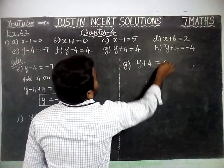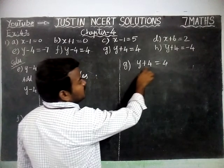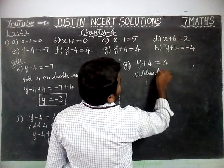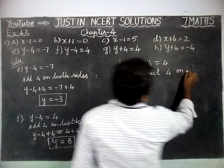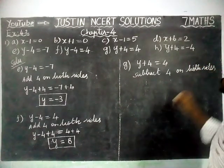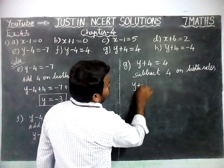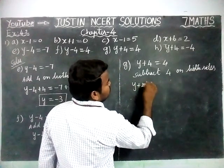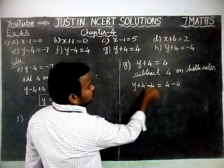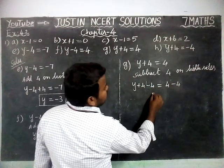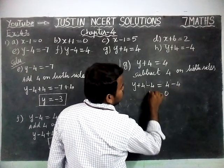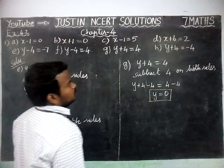Next option G: y plus 4 is equal to 4. We have to subtract 4 on both sides. y plus 4 minus 4 is equal to 4 minus 4. Plus 4 minus 4 gets cancelled, so y is equal to 4 minus 4 which equals 0. The y value is equal to 0.